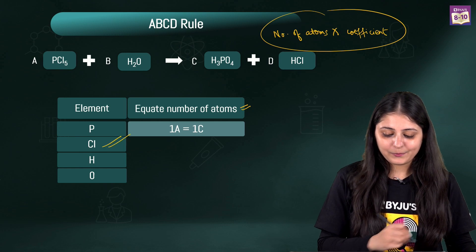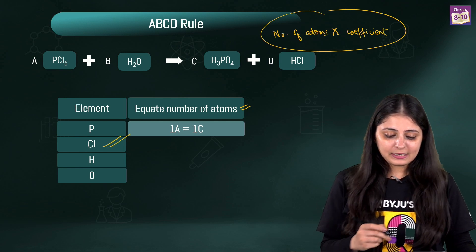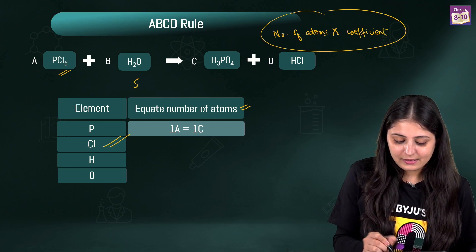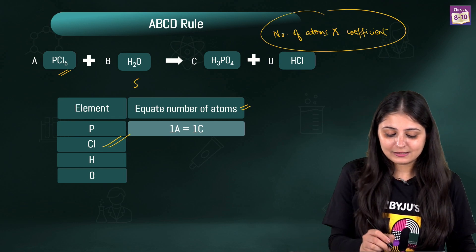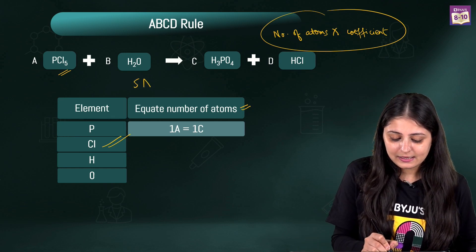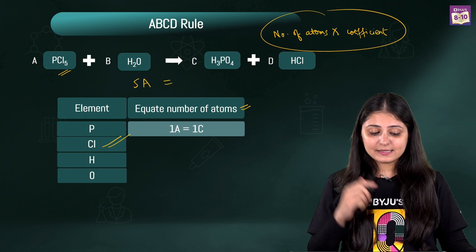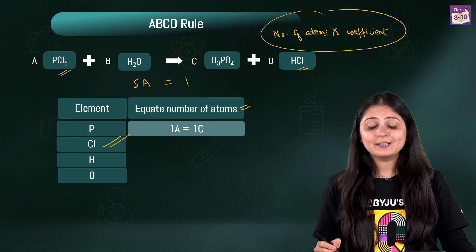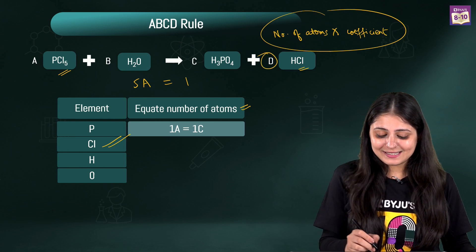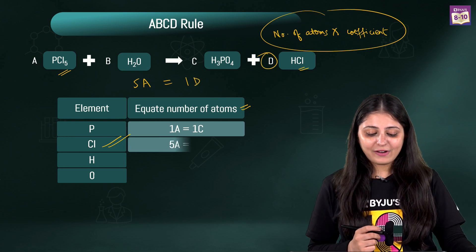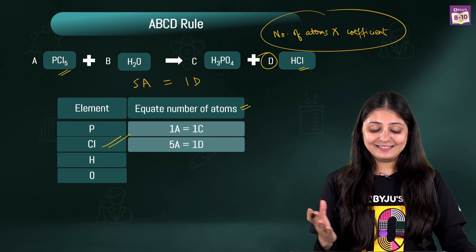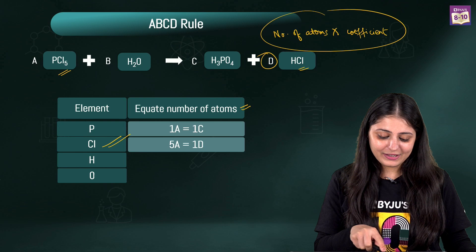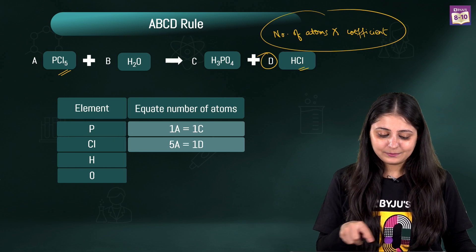Now for chlorine: on the reactant side there are 5 chlorine atoms with coefficient A, and on the product side there is 1 chlorine atom with coefficient D. So the equation is 5A = 1D. Well done — you're halfway through!